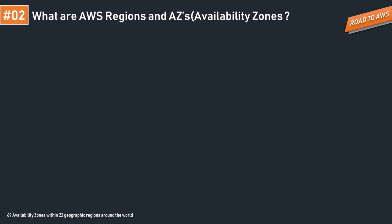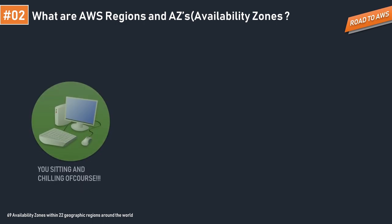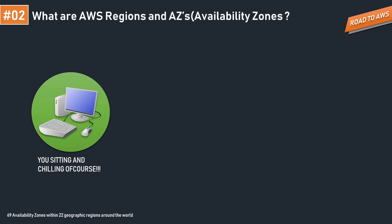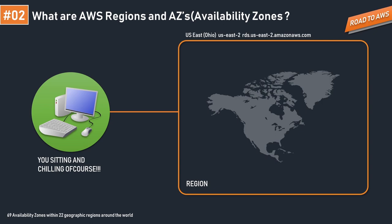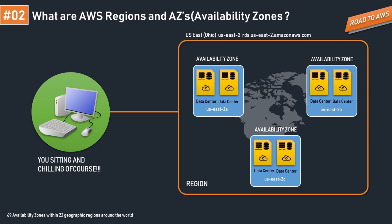Now let's see how regions and availability zones work in practice. Suppose you are a user accessing resources in a particular region — that region is a geographical location combining one or more availability zones. Let's say our region is us-east-2, with availability zones us-east-2a, us-east-2b, and us-east-2c. Each availability zone is a powerhouse of resources — a combination of multiple data centers where your application runs. Availability zones are isolated from each other, but to achieve high availability we must host instances across all of them.